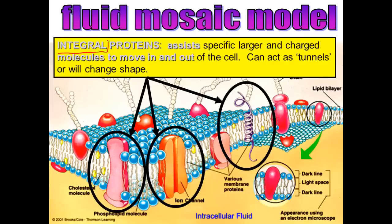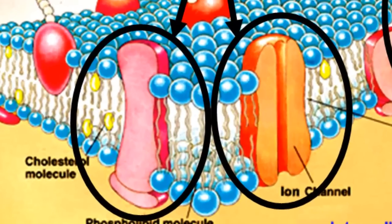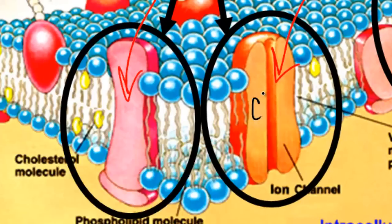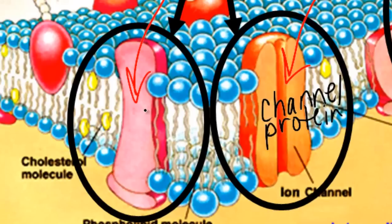Let's talk about the proteins in the plasma membrane. An integral protein helps things that are larger, charged, or polar move in and out of the cell, because they can't go straight through the phospholipids — they need a different way. These proteins can either act as tunnels or change their shape to force things in and out. The one that acts as a tunnel is called a channel protein, and the one that changes shape is called a carrier protein — it physically carries things in and out of the cell.